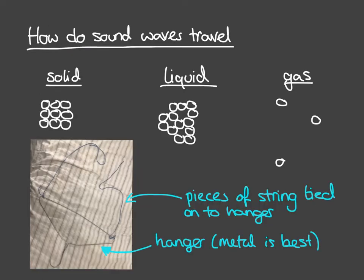Think about what happens if we change the material the vibrations are passing through — from a gas to a liquid or a solid. You can try this at home with a metal hanger or metal spoon: tie two bits of string to it, bang it against something so it dings, then with the string wrapped around your fingers, put your fingers in your ears and listen. Think about why that's happening — link it back to whether it's a solid, liquid, or gas, and look at the arrangements of the particles and what that implies for how easily vibrations pass from one set of particles to the next.